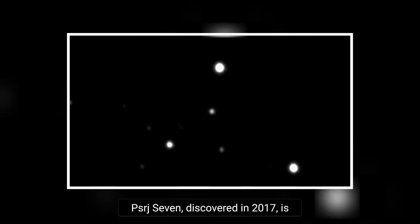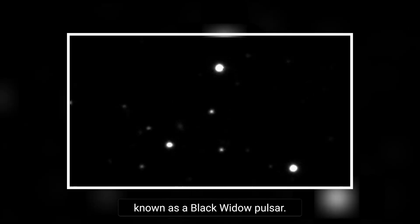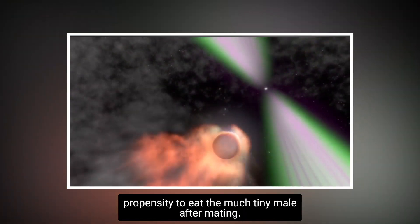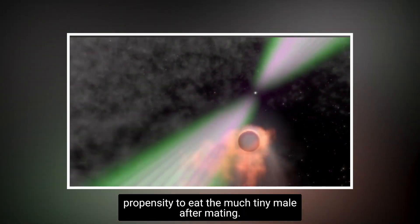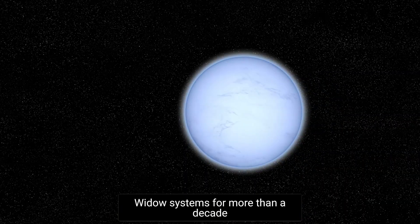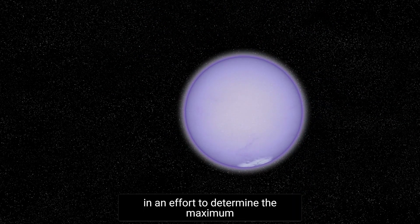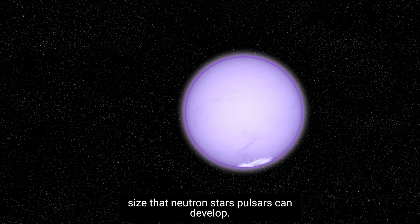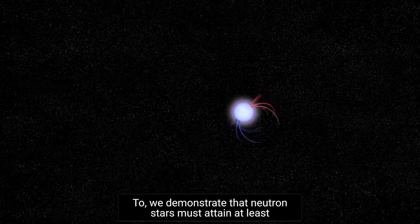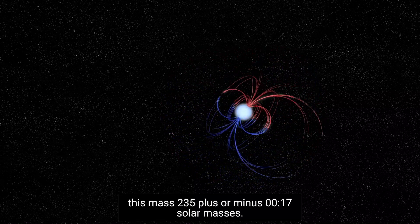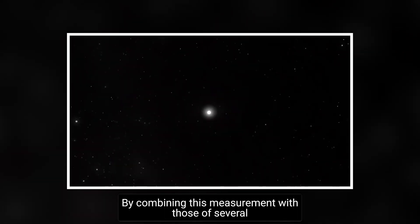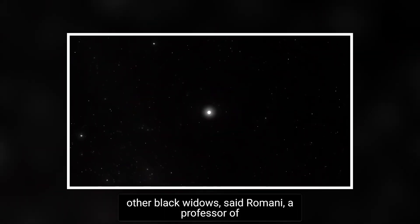PSR J0952-0607, discovered in 2017, is known as a black widow pulsar. Their name refers to a female black widow spider's propensity to eat the much tinier male after mating. Filippenko and Romani have been researching black widow systems for more than a decade in an effort to determine the maximum size that neutron stars can develop to. We demonstrate that neutron stars must attain at least this mass, 2.35 plus or minus 0.17 solar masses, said Romani.